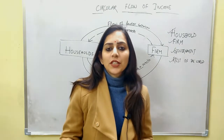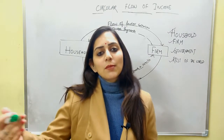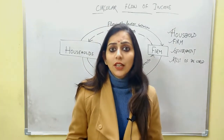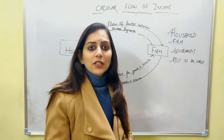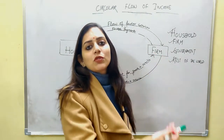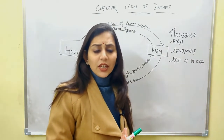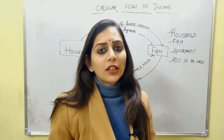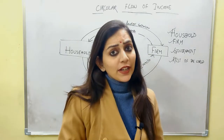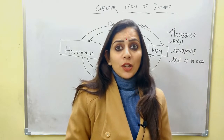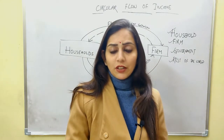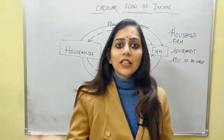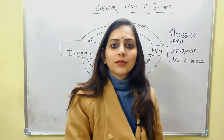But the story doesn't end there. The second angle is that the money earned by the household is used for consumption — to satisfy wants — so where does that money ultimately go? It goes back to the firms, when we buy goods and services from them. For example, Mr. Z works in a medicine factory, providing his services there. When he receives his salary, he spends that money — buying toys for his children, food for his family — so that money goes back to the firm as a whole.